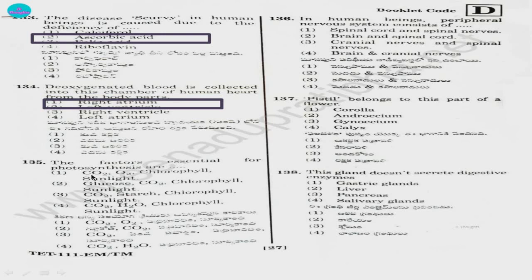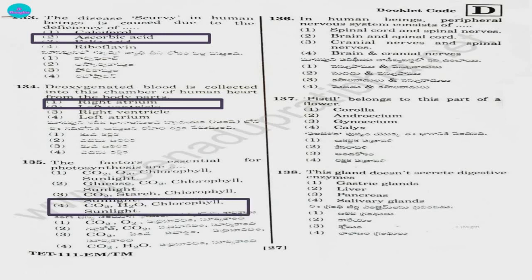Question 135. The factors essential for photosynthesis are: 1) carbon dioxide, oxygen, chlorophyll, sunlight; 2) glucose, carbon dioxide, chlorophyll, sunlight; 3) carbon dioxide, starch, chlorophyll, sunlight; 4) carbon dioxide, water, chlorophyll, sunlight. The answer for 135 is option 4 — carbon dioxide is needed, water is needed, chlorophyll pigments are needed, and sunlight is needed.